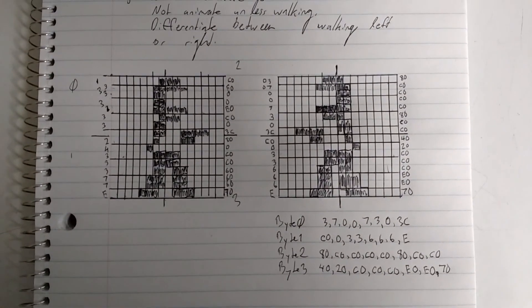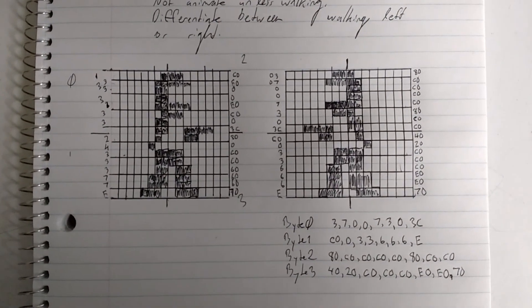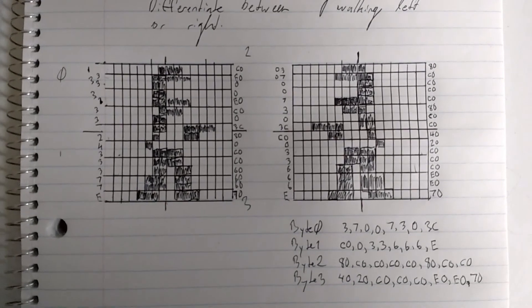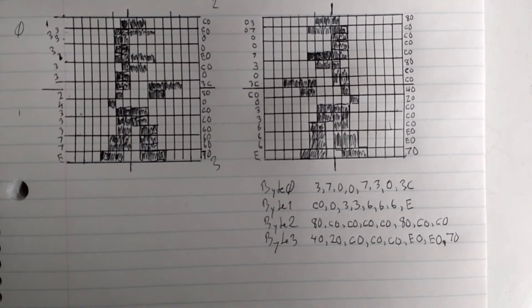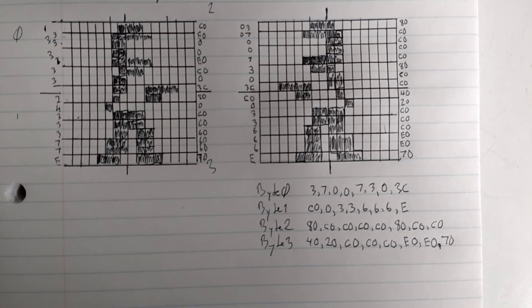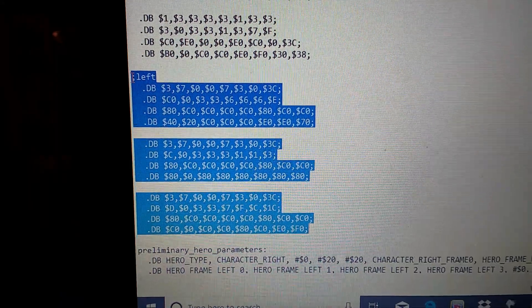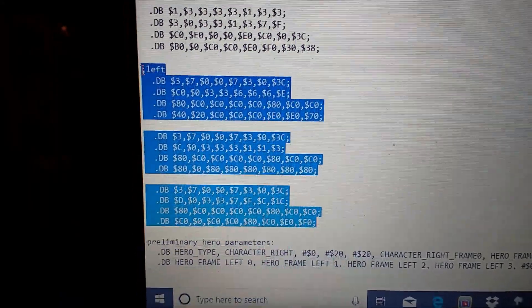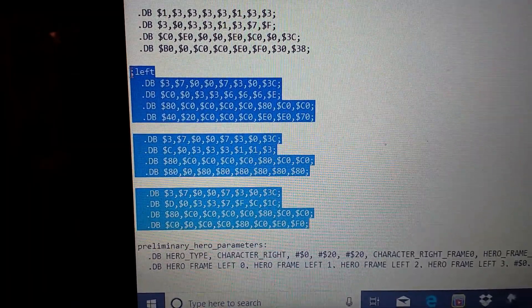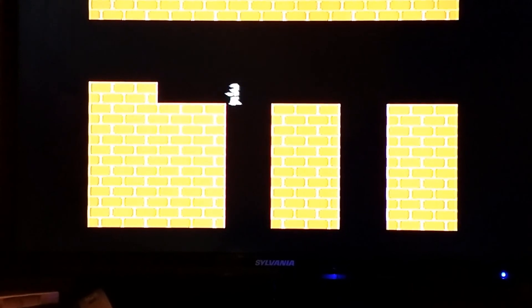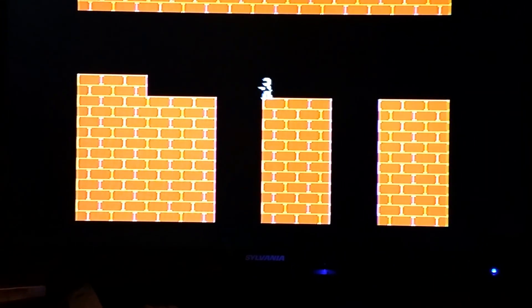Alright, quick update here. I finished manually entering the mirror image of the sprite, and below this is the sequence of bytes in order to program it. I've added the sprite data to the program — let's see how this compiles. Alright, so here's the net result: we're able to do both directions, and it animates properly from what I can tell.